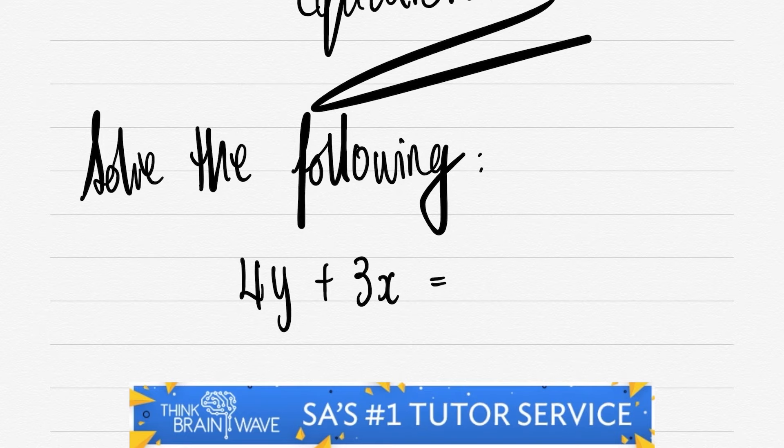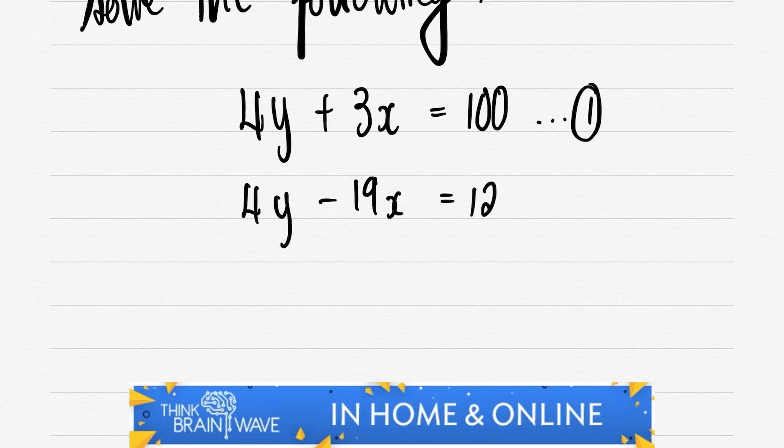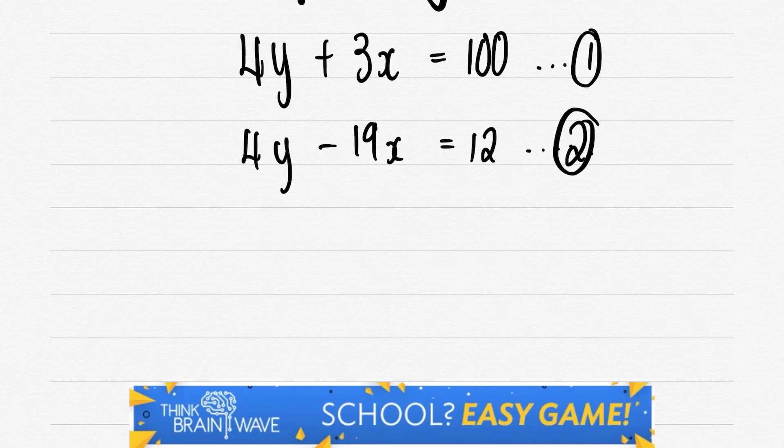Alright, so we have 4y + 3x = 100. That's our first equation, and then we have 4y - 19x = 12. That's our second equation.